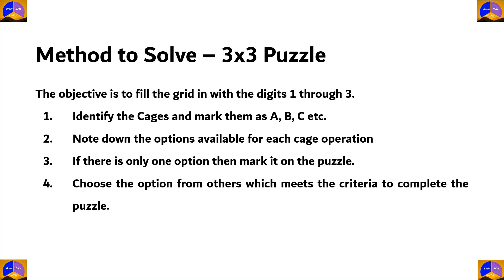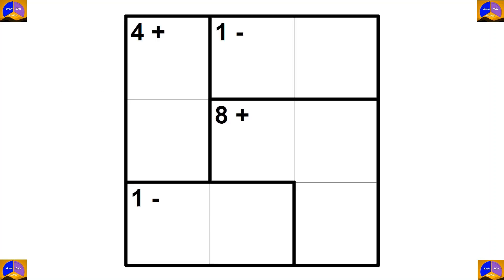The objective is to fill the grid with the digits one through three. Step one: identify the cages and mark them as A, B, C, etc. Step two: note down the options available for each cage operation. Step three: if there is only one option, mark it on the puzzle. Step four: choose the option from others which meets the criteria to complete the puzzle. Now let's solve a Math Doku puzzle.